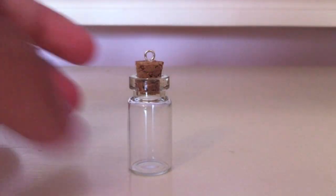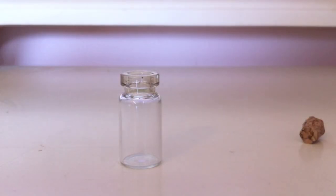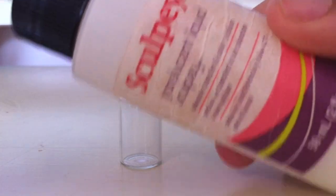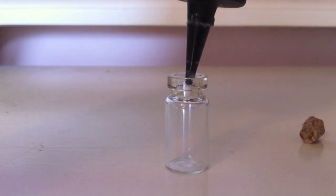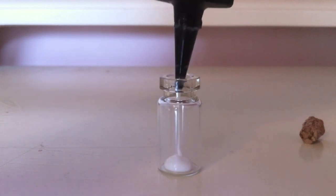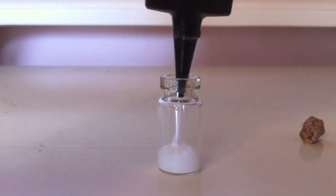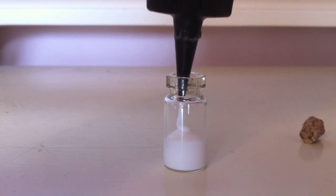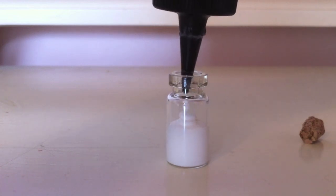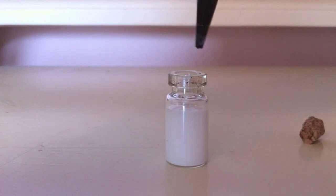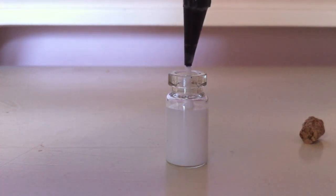You're going to start off by taking off the little cork on your glass bottle. Take your translucent liquid Sculpey and just fill it up. That seems about just right.